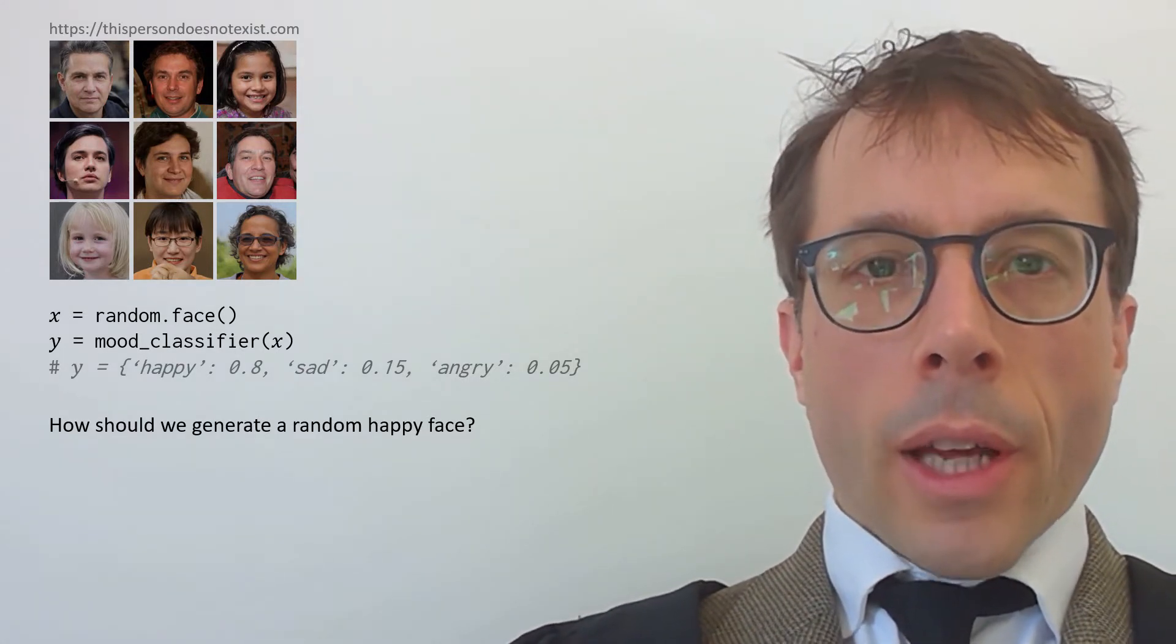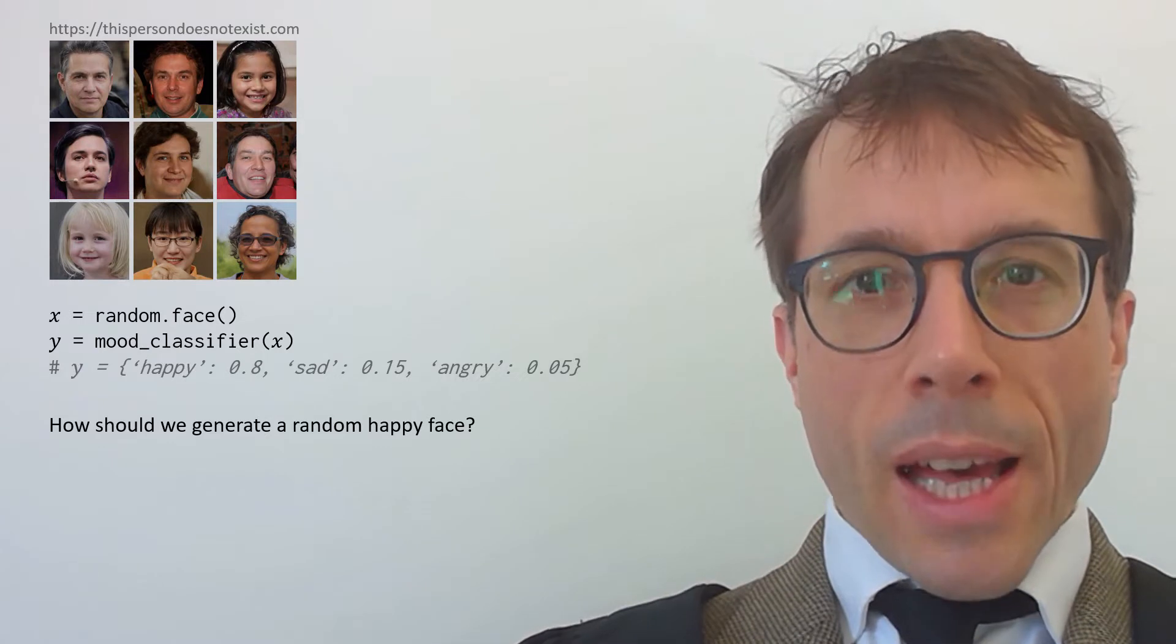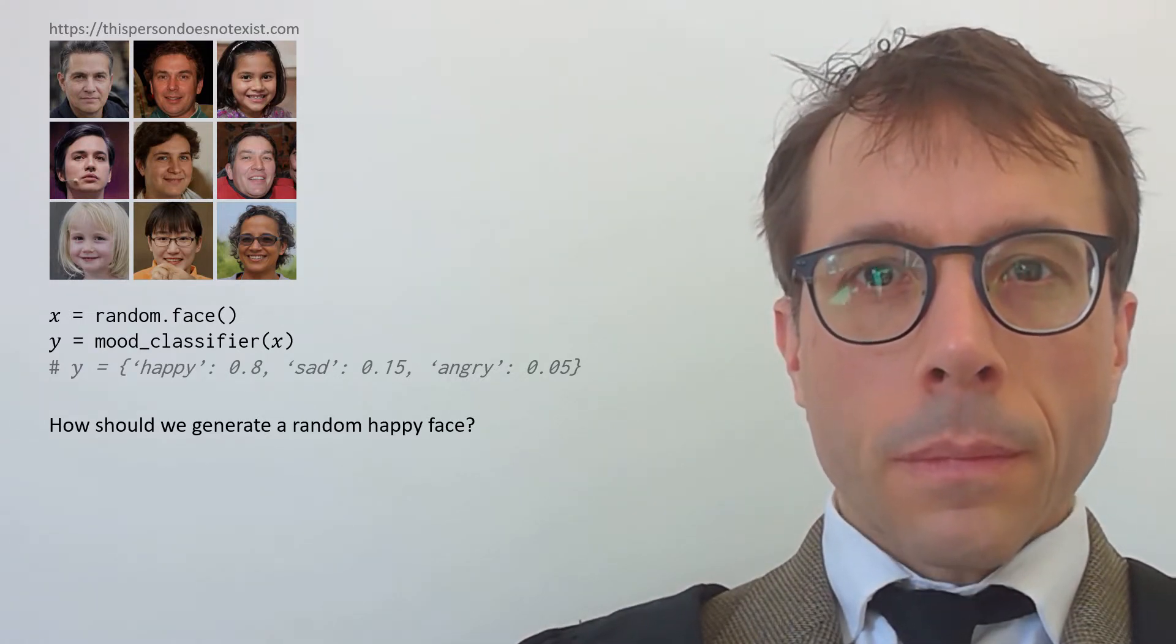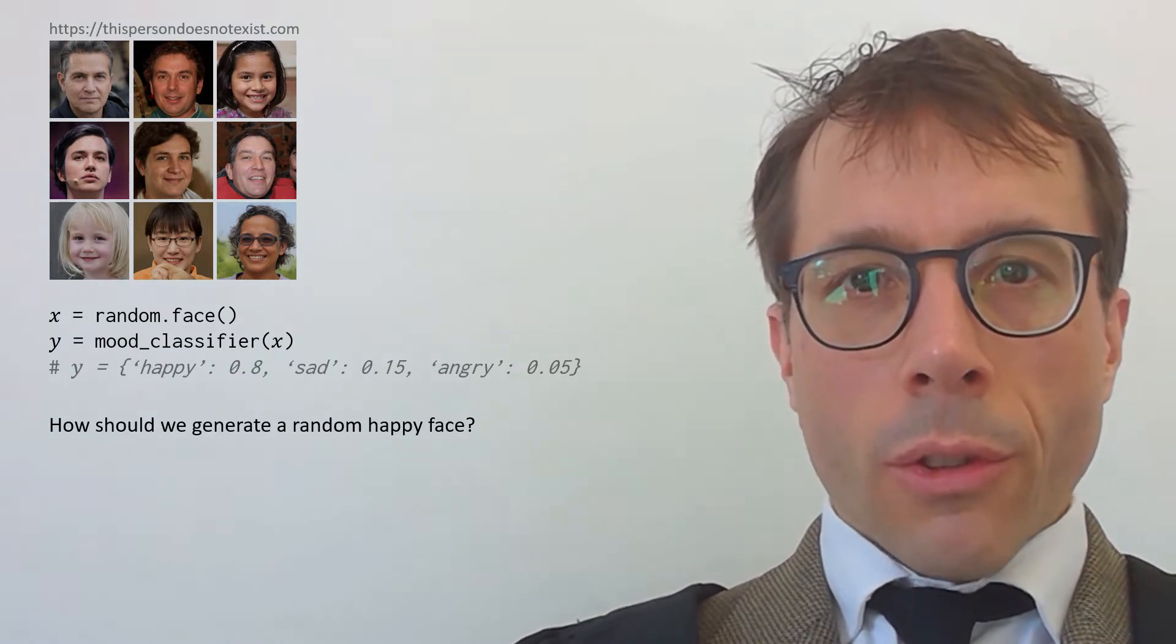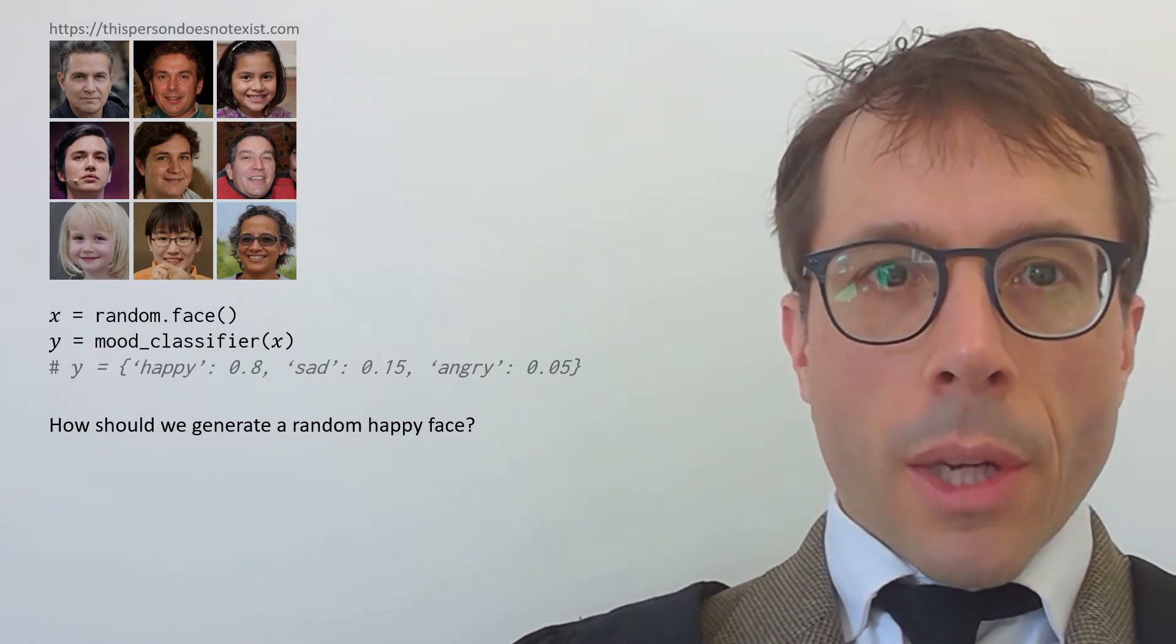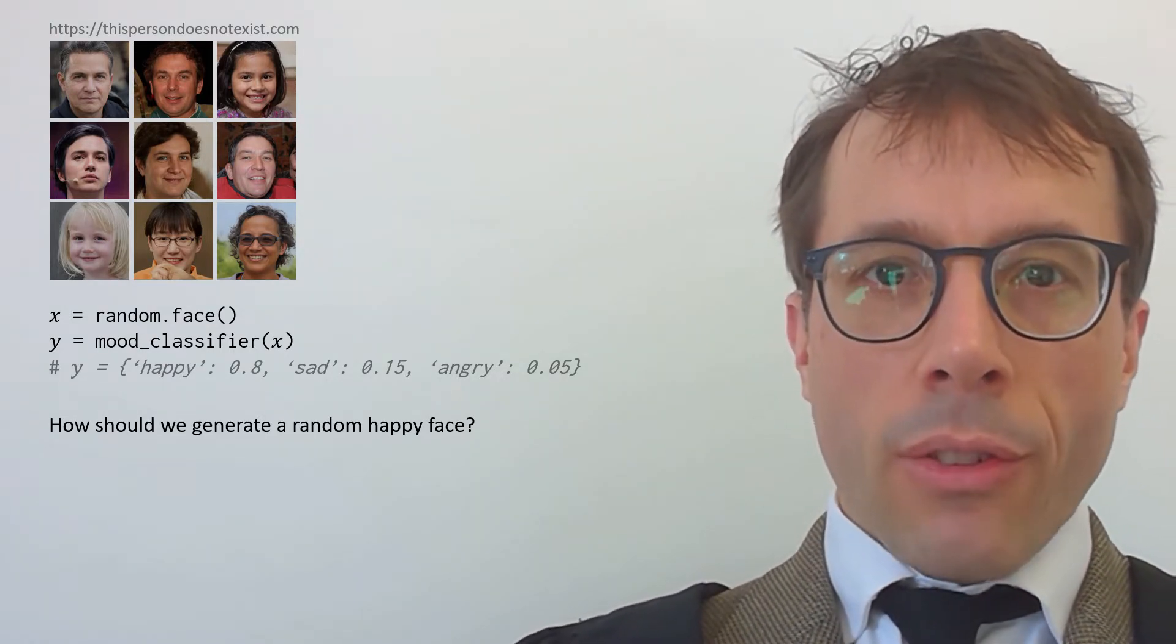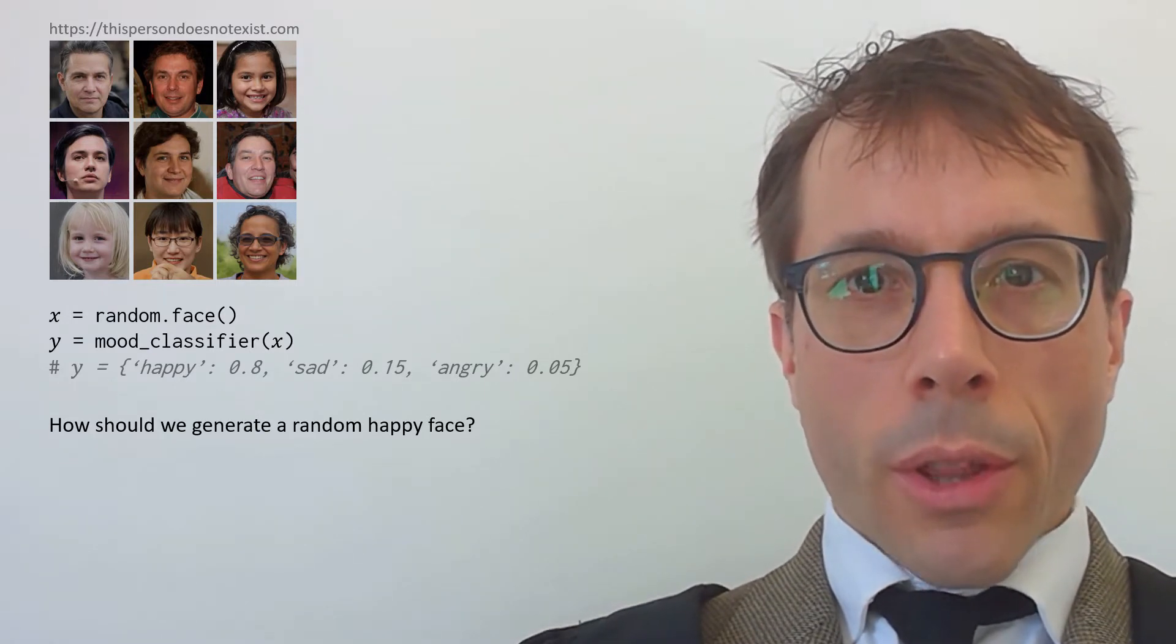Now, here's a question. How might we generate a random happy face? If you think like a programmer, you might say, easy, I'll just keep generating faces, feed them into the mood classifier, and if the happy score comes out high, I'll stop and return that face.